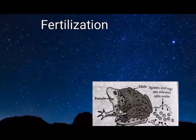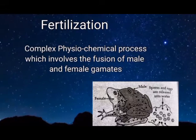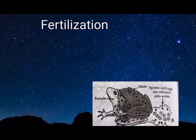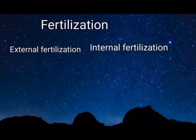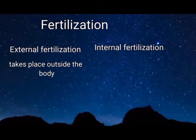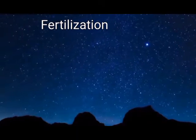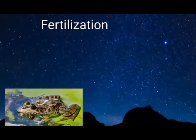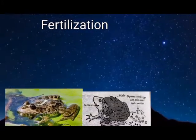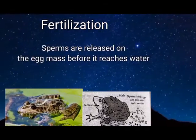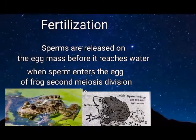The second stage is fertilization — a complex physiochemical process involving the fusion of male and female gametes. Based on location, fertilization is of two types: external fertilization and internal fertilization. External fertilization takes place outside the body, whereas internal fertilization takes place inside the body. Frogs lay eggs in water, so they have external fertilization. The sperms are released on the egg mass before it reaches water. When a sperm enters the egg of a frog, the second meiotic division occurs.